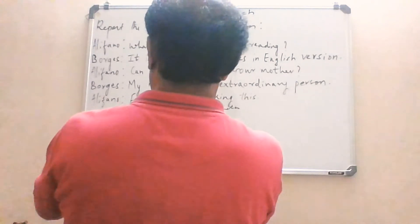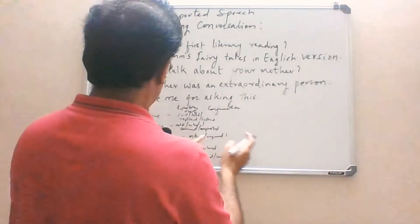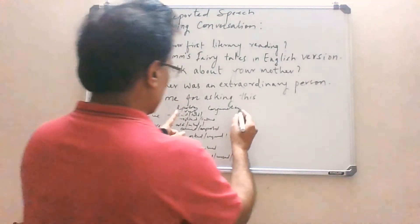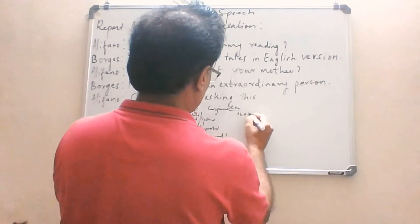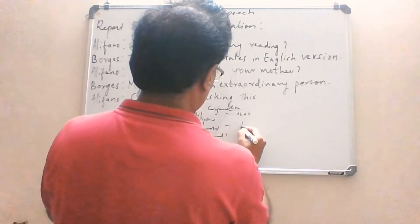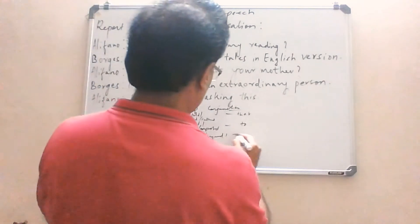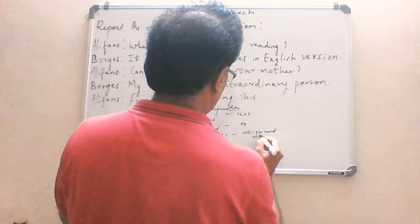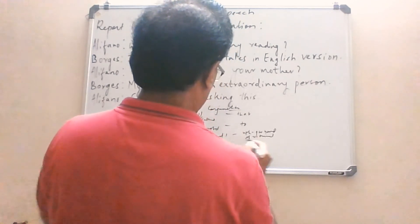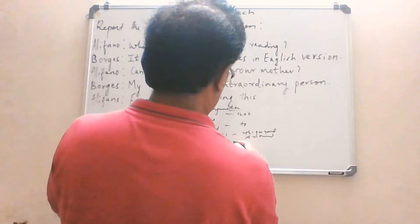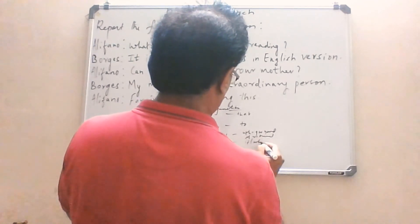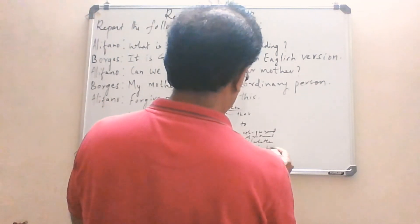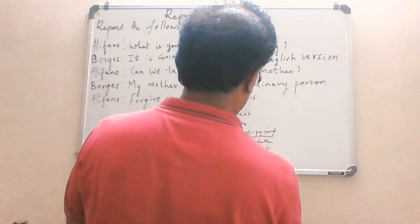Now, conjunctions used when the spoken part contains different kinds of sentences. With assertive sentences, the conjunction used is 'that'. With imperatives, 'to' is used to join both parts. With interrogatives, the WH question word is retained. To join yes/no form of questions, 'if' or 'whether' is used to join both parts. For exclamation, 'that' is used, and for optative, again 'that' is used.